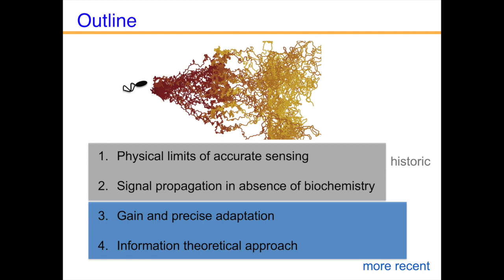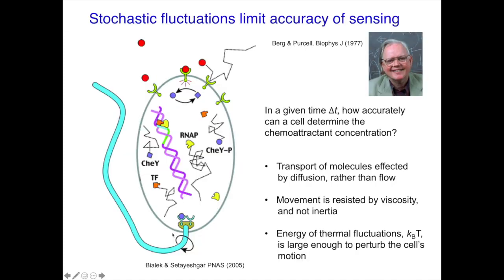In this talk, I want to briefly cover historic aspects of bacterial chemotaxis — in particular, the physical limits of how accurately a small cell can sense its environment, signal propagation without much knowledge of the biochemistry, then signal amplification by receptor clusters and precise adaptation, and finally a more recent information-theoretic approach.